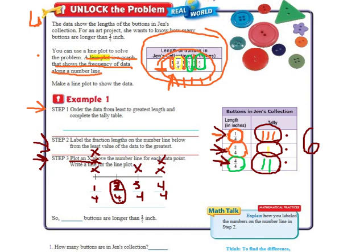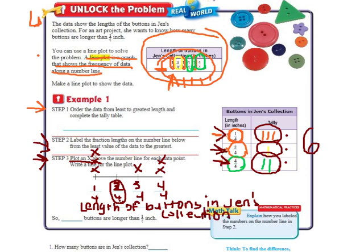Now the second part of the directions for step 3 said write a title for the line plot. We're just going to call this Length of Buttons in Jen's Collection. Sorry, it's hard to write so small with this pen. Alright, and we're done.